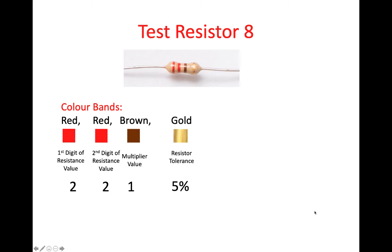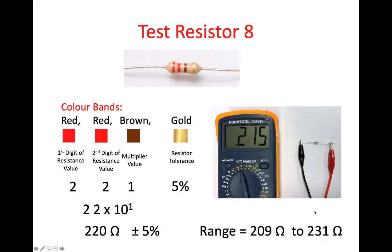And gold is plus or minus 5%. So we have 22 multiplied by 10 to the power of 1, plus or minus 5% — that's 220 ohms, plus or minus 5%, which gives a range of 209 ohms to 231 ohms. When we measure this resistor, we get 215 ohms, so that falls within the range.